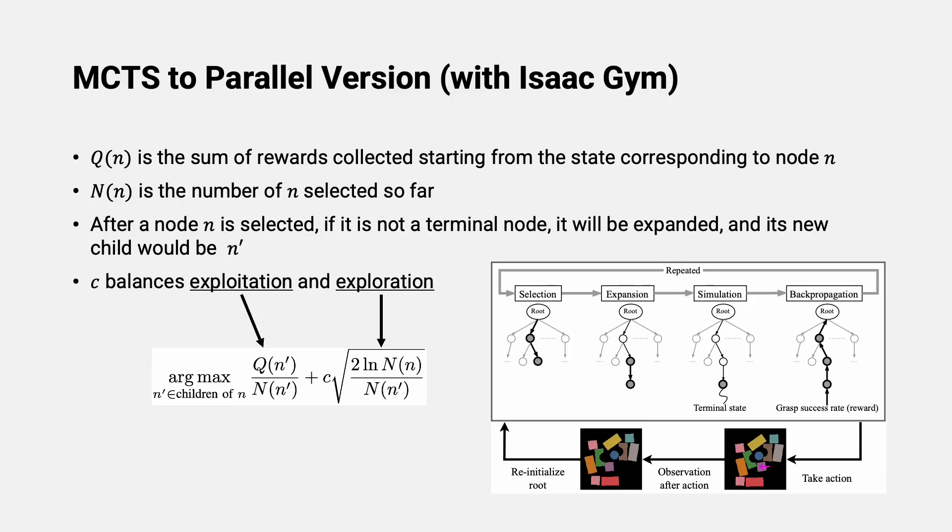In a single thread standard MCTS process, a leaf node is selected to expand. Subsequently, a child of that leaf is simulated to a terminal state. The reward is then backed up to the root of the tree. Node selection is the key to this tree search and is driven by the formula, which favors nodes with higher average collected rewards and fewer visits.